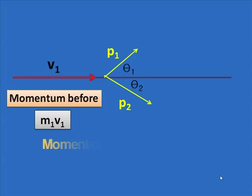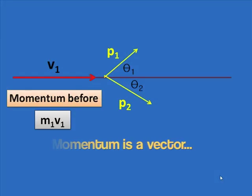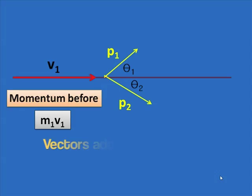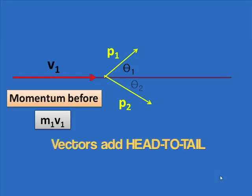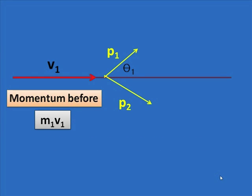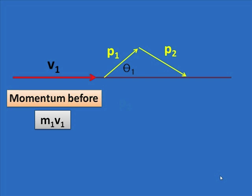Momentum is a vector, and we can add these two vectors head to tail. We bring p2 up and put the tail of p2 on the head of p1 to find the sum of these two vectors after the collision. Notice that the momentum before equals p1 plus p2 head to tail — the momentum after equals the momentum before the collision.